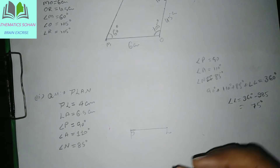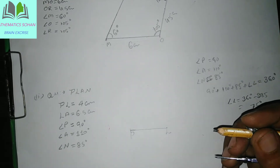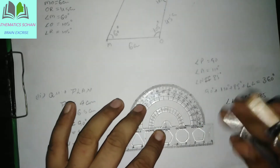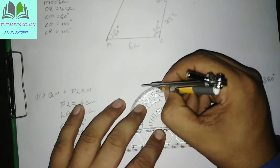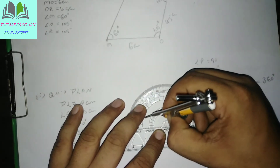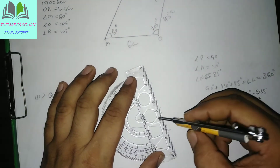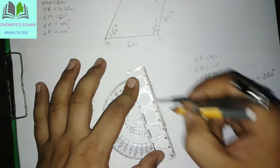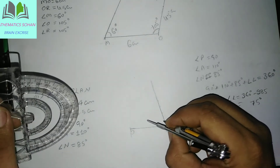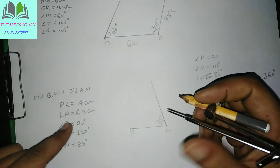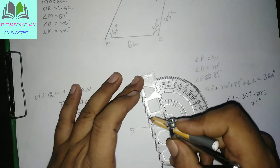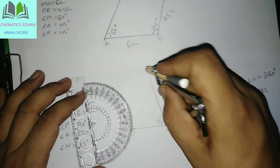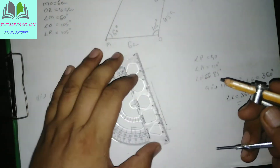Ab hum kya karte hain — L ke upar 75 degree ka angle bana lete hain. L ke upar 75 degree ka angle bana lete hain, try kar lete hain. L ko center mankar ek try kar lete hain hum yahan par 75 degree — 70 aur 80 ke beech. Yeh value aayi hamare. Ab L se A — 6.5 cm lekar hum L se A draw kar lenge. Yeh hamara 6.5 aa gaya. L se 6.5 cut karenge, isko aage produce kar denge.